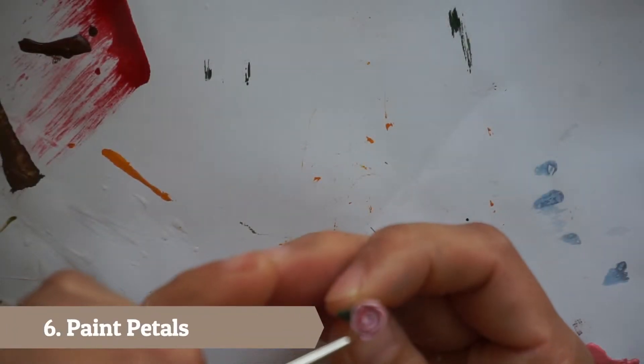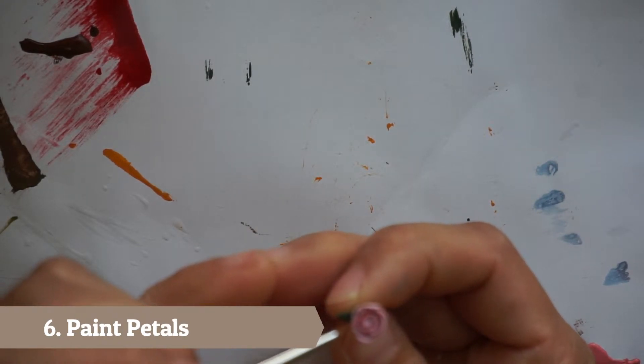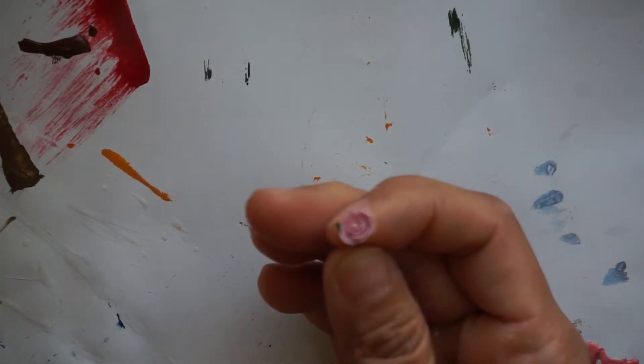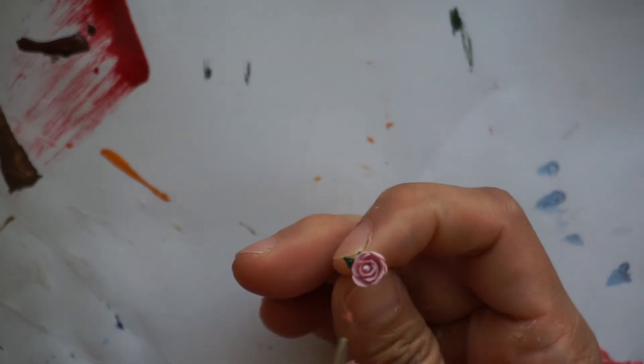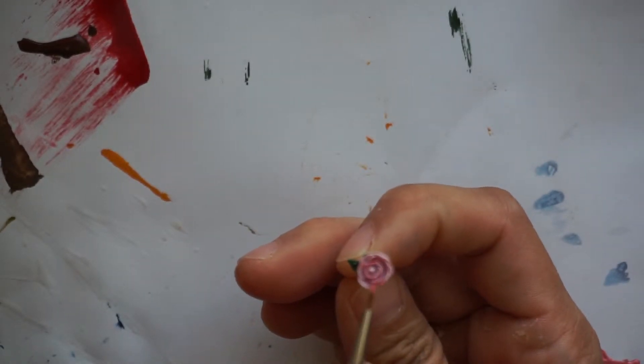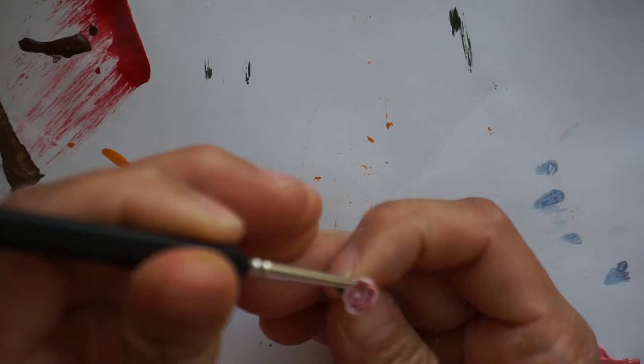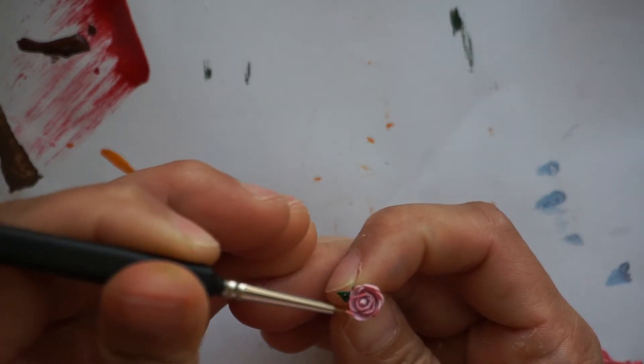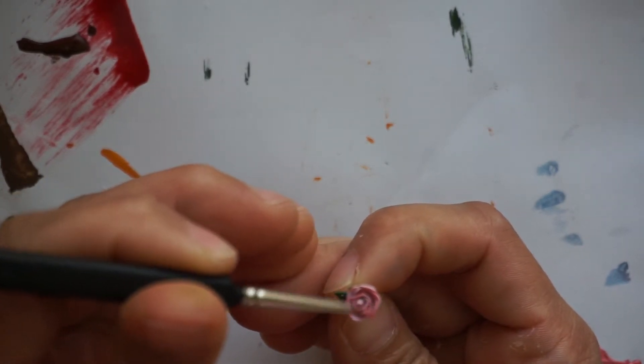If you are using a light colored clay, you can additionally paint the edges of the petals with a much darker color. Here I am painting it with a darker pink so it will show the petals more.